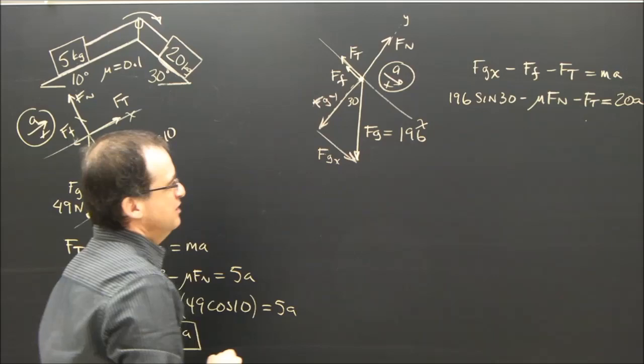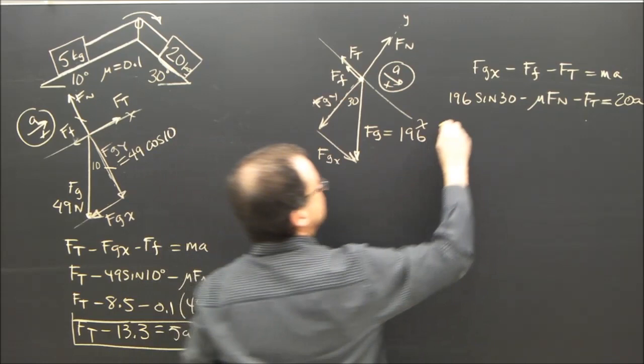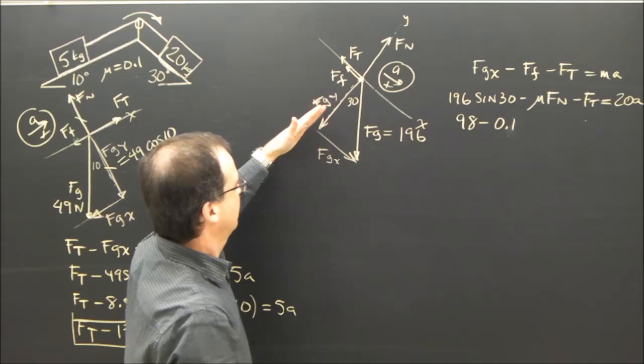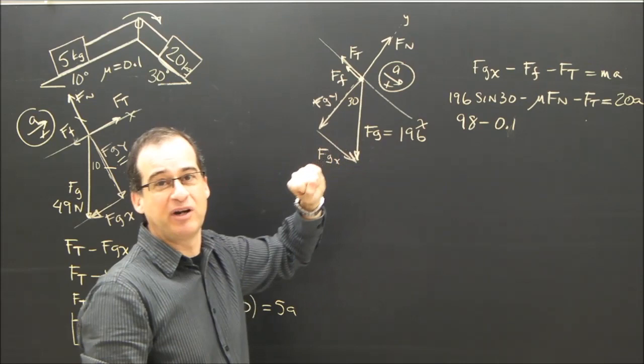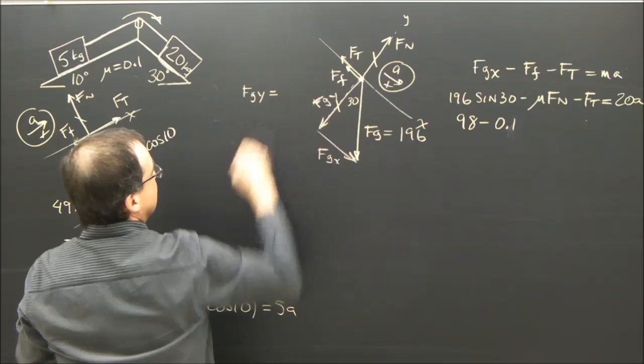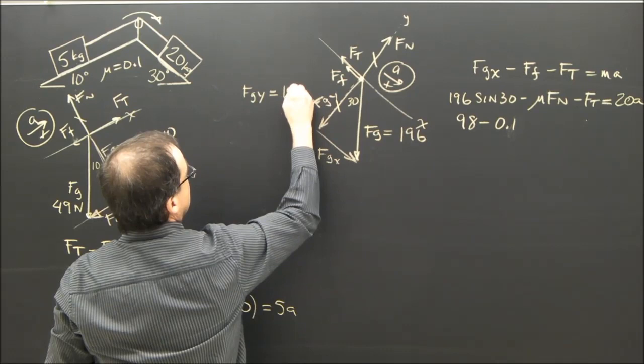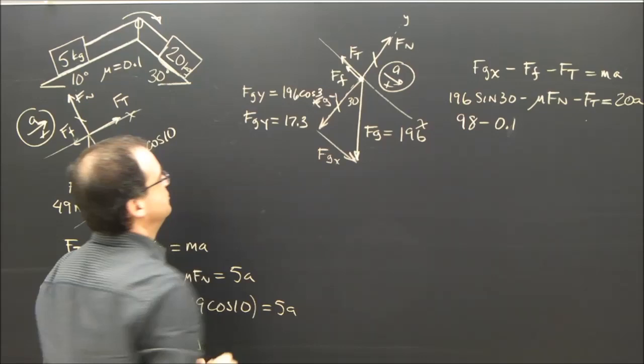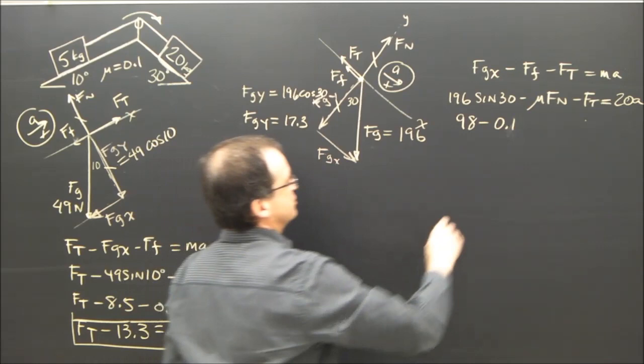So 196 sine 30 is 98, mu is 0.1, and fn, I can do the same thing I did with the other one. In the y direction, there's only two forces, fgy and fn. Since it's not accelerating in the y direction, then these two must be equal. So fn is equal to fgy. What is fgy? fgy is 196, and this is the adjacent side, so it's cosine 30. 196, cosine 30. fgy equals 17.3.